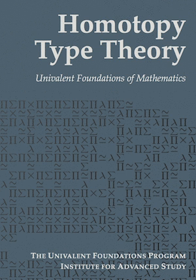Their paper also foreshadowed several later developments in homotopy type theory. They noted that the groupoid model satisfies a rule they called universe extensionality, which is none other than the restriction to one-types of the univalence axiom that Vladimir Voevodsky proposed ten years later. They also defined "categories with isomorphism as equality" and conjectured that in a model using higher dimensional groupoids, for such categories one would have "equivalence is equality." This was later proven by Benedikt Ahrens, Christoph Kapulkin, and Michael Schulman.